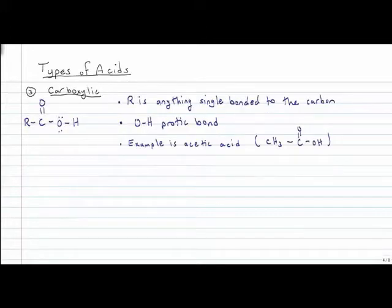We also have carboxylic acids. And these are fairly common acids for us to talk about in chemistry, especially biochemistry. But these carboxylic acids, they are of the form R, which can be any organic or any inorganic, anything that can single bond here. Anything at all.